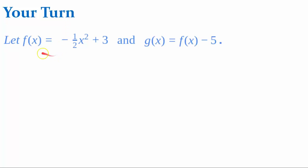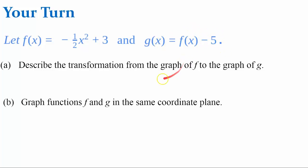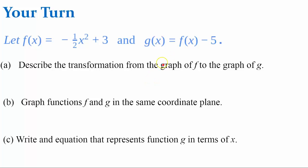Your turn. We have function f, which is negative one-half x squared plus 3, and function g, which is a transformation of function f. First, we're going to describe the transformation of the graph of f to the graph of g. The change to g is subtract 5. Then we'll graph both functions in the same coordinate plane and write an equation that represents function g in terms of x. Go ahead and pause the video and come back when you want to check your work.